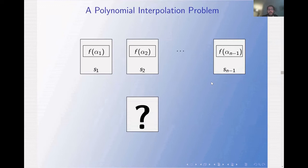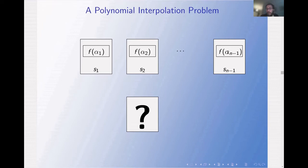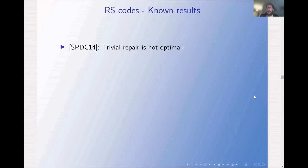The repair problem of Reed-Solomon codes can be thought of as a new polynomial interpolation problem. In the classical interpolation problem, we have K distinct points and want to find the polynomial of degree at most K minus 1 passing through them. Here, the question becomes: how much information is needed from f(alpha_1) up to f(alpha_{N-1}) to determine f(alpha_N)? We only need to find out a single evaluation point, not the entire polynomial.